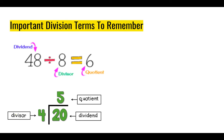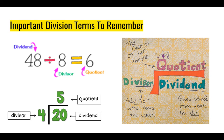I have one strategy that helps me remember what terms are where, and that's using my queen quotient strategy. The quotient — queen quotient — is always on top of her throne in her castle. She has two advisors: the divisor is afraid of her so she always stays on the outside of the castle when giving advice. The dividend loves the queen and gives advice from inside the den of the castle.